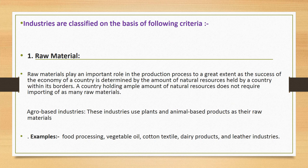Industry classification, or industry taxonomy, is a type of economic taxonomy that organizes companies into industrial groupings based on similar production processes, similar products, or similar behavior in financial markets. It may be used by national and international statistical agencies to summarize economic conditions, and by securities analysts to understand common forces acting on groups of companies, to compare company performance to peers, and to construct specialized or diversified portfolios. Industries are classified on the basis of the following criteria.